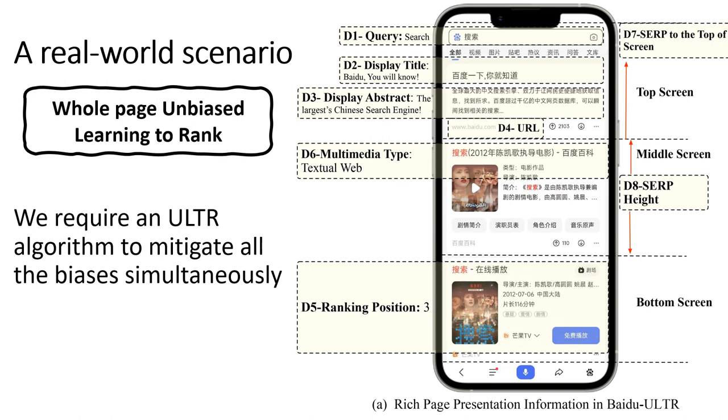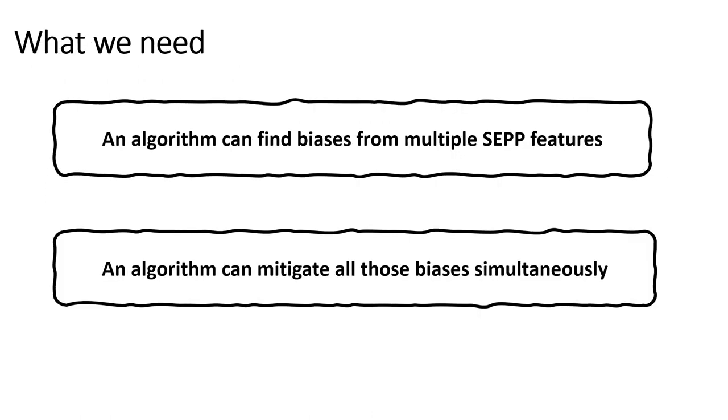So we propose a new scenario called Whole Page Unbiased Learning to Rank, considering multimedia type, ranking position, height, and SRP features. We require an ULTR algorithm to not only mitigate position bias, but all other biases simultaneously.